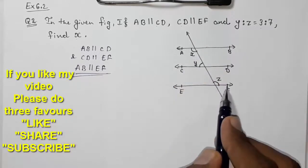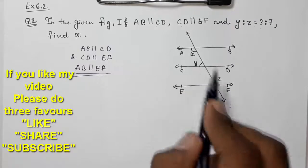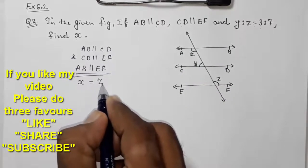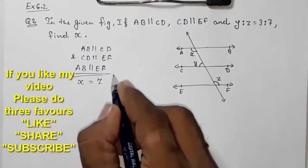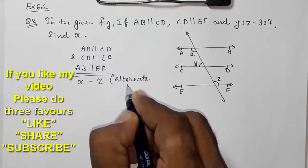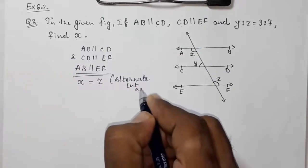I had proved that AB is parallel to EF and these two lines are parallel, so directly I can write down that X is equal to Z by alternate interior angles.